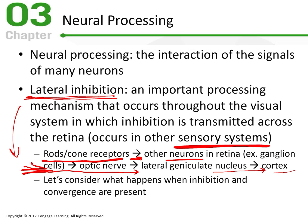Inhibition is when a neuron does not fire — it's inhibited. Convergence, from the previous chapter, is simply when a number of neurons synapse onto a single neuron, allowing complex processing to occur. More convergence results in greater sensitivity, which is where we see rods providing greater sensitivity for night vision. Less convergence, which is what we see in cones, results in better detailed vision.